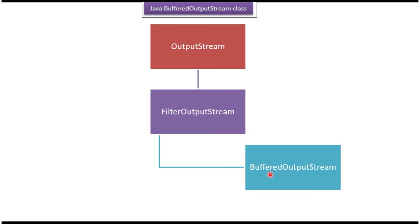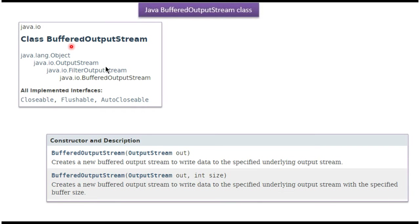The super class of Buffered Output Stream is Filter Output Stream. The super class of Filter Output Stream is Output Stream. The super class of Output Stream is Object. Buffered Output Stream class belongs to the Java.IO package and implements Closeable, Flushable, and AutoCloseable interfaces.